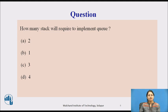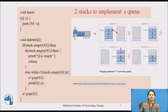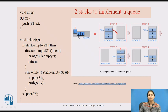One more question — try to answer it. How many stacks will be required to implement a queue? The options are 2, 1, 3, and 4. A queue is a data structure where the number inserted first is deleted first — so if 1, 2, 3 are inserted in that sequence, deletion will also be in the sequence 1, 2, 3.